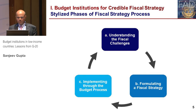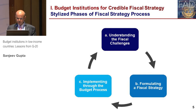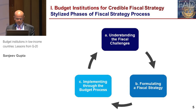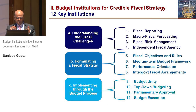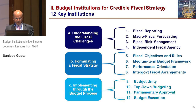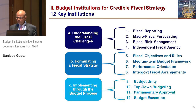We came up with three phases for the fiscal strategy. The first phase is to understand what the fiscal challenge is. The second stage is formulating a fiscal strategy on the basis of this understanding. The third stage is to implement that strategy through the budget process. To implement this strategy, we came up with a list of 12 institutions across the different phases of fiscal strategy which are important for achieving fiscal policy goals.